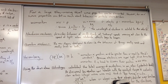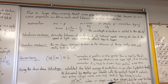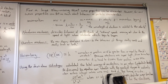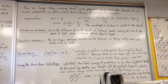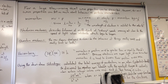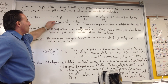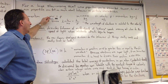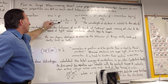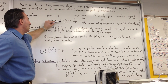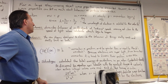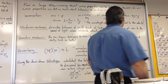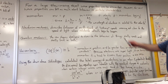For a large, slow-moving object, wave properties can be discounted. However, for an electron, wave properties can tell as much about behavior as particle characteristics. Momentum is defined as mass times velocity, and the wavelength of an electron is related by Planck's constant divided by mass times velocity. So the momentum of an electron is directly related to its velocity, and the wavelength of electrons is related to their velocity as well.